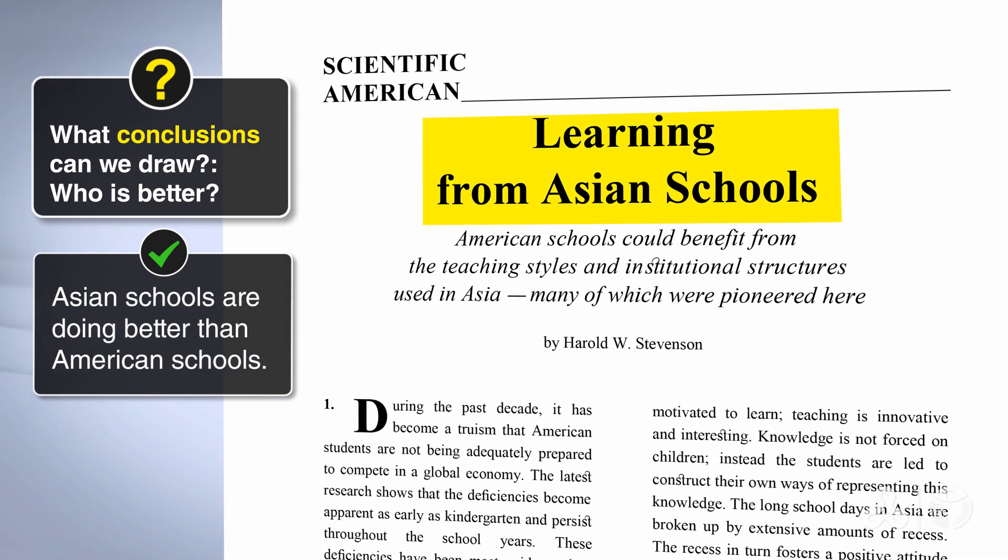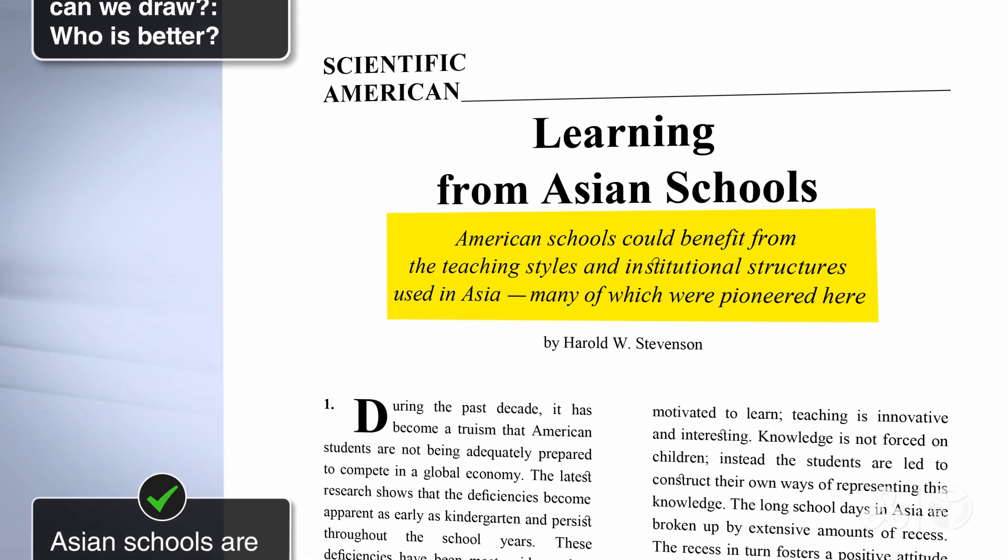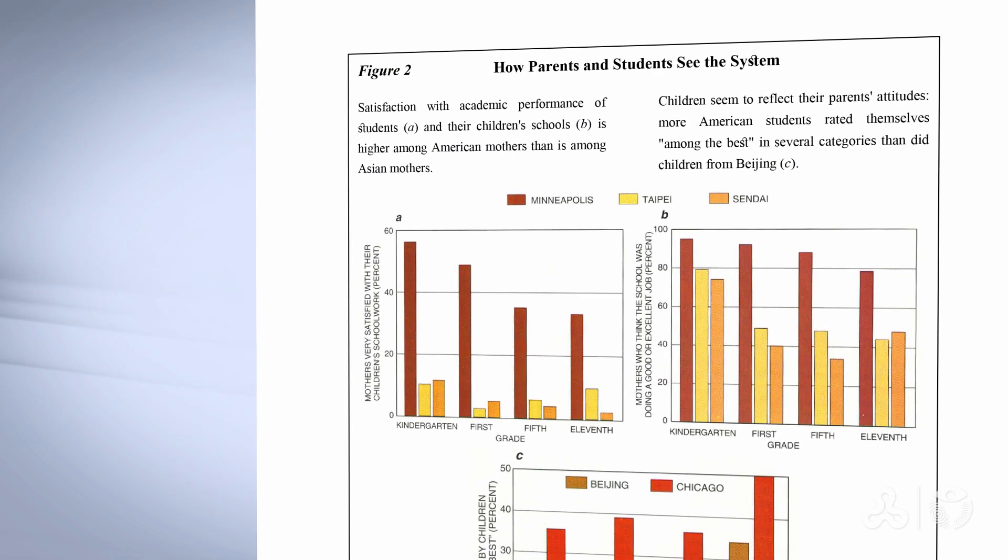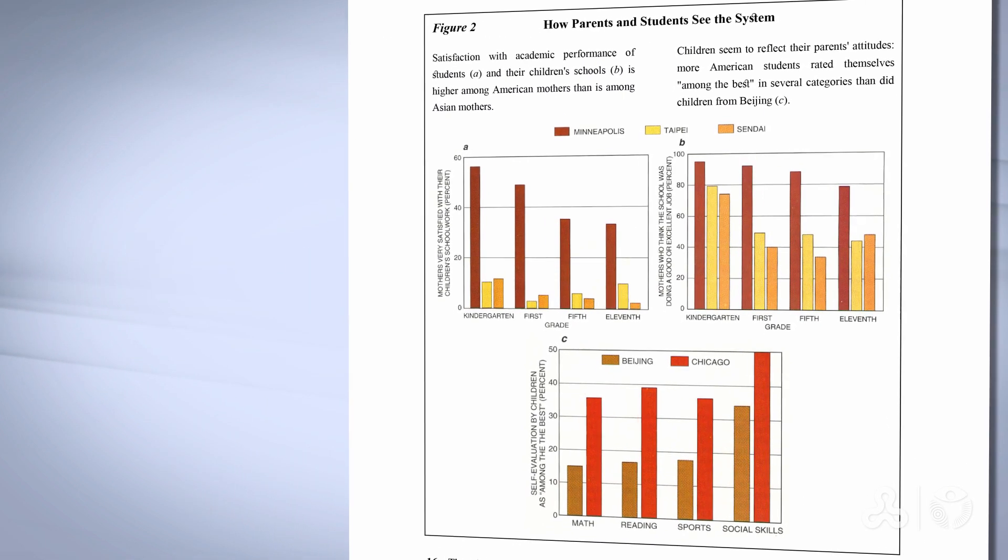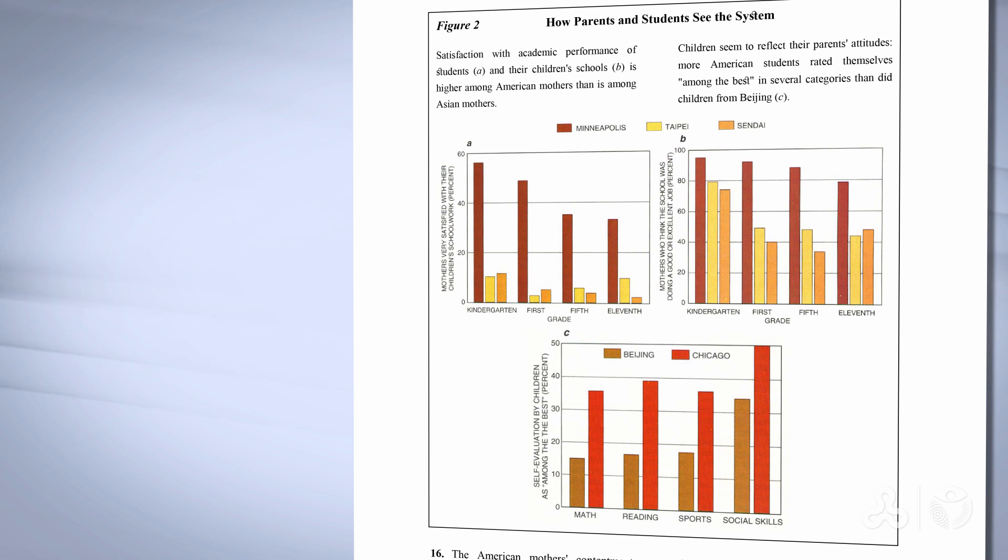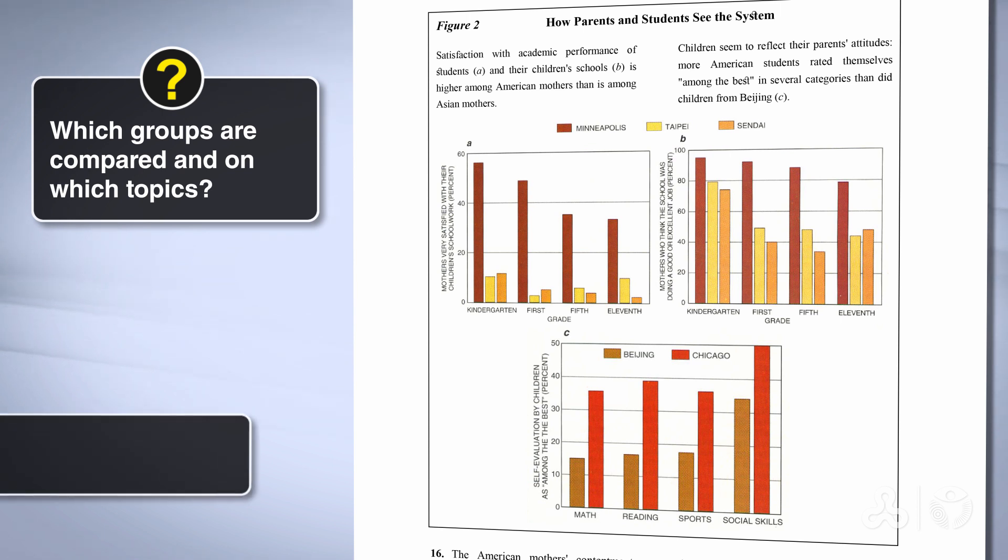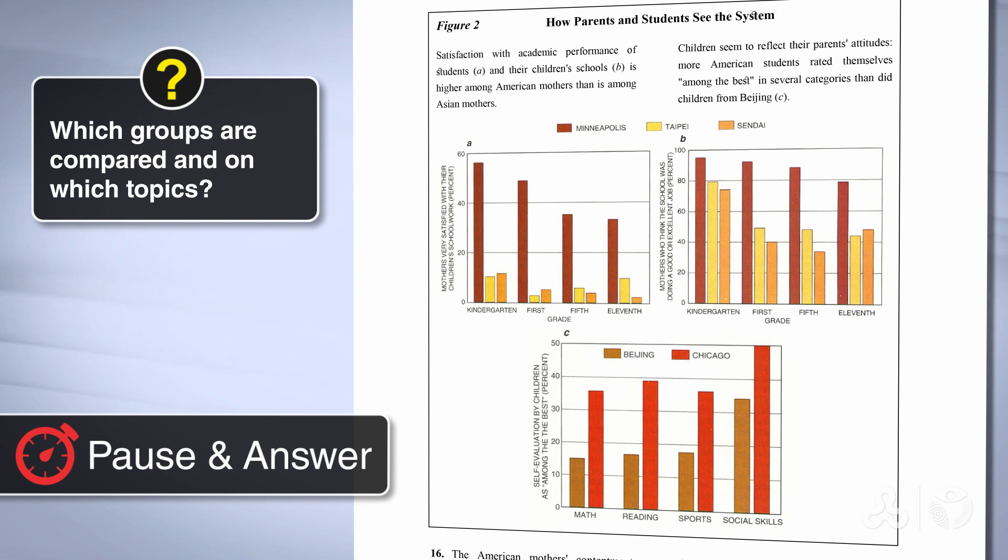American schools can learn from Asian schools, or American schools could benefit from the teaching styles used in Asia. Now let's look at figure two. We have three graphs. Our question: Which groups are compared? And on which topics? Take yourself a few minutes. Press the pause button and come back when you're ready.